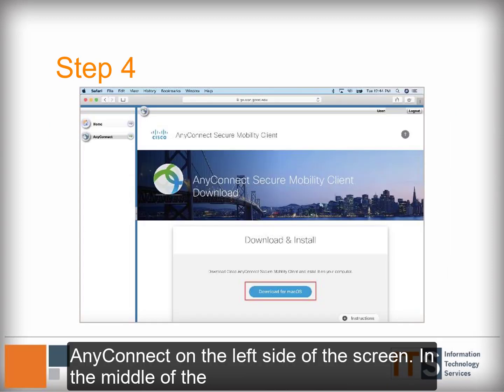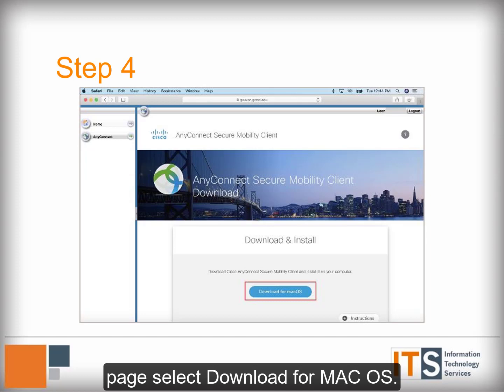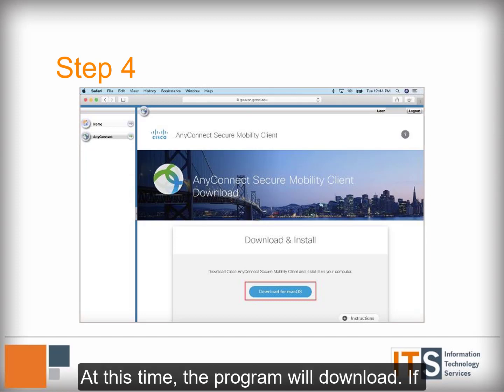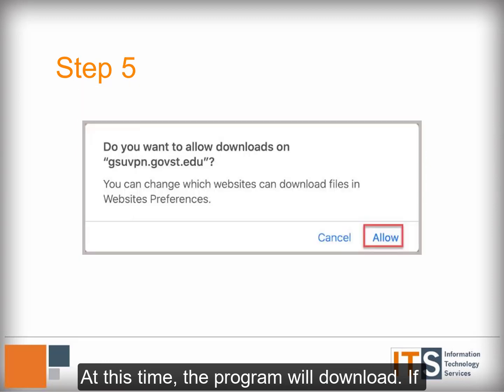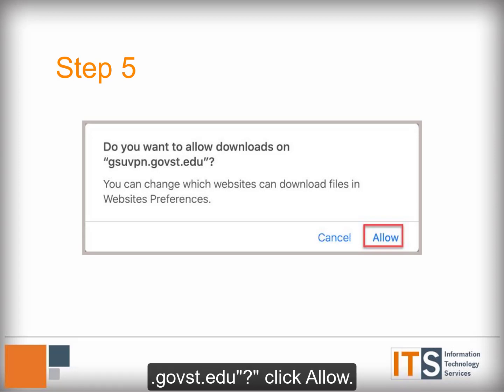In the middle of the page, select Download for Mac OS. At this time the program will download. If prompted to allow downloads on gsuvpn.govst.edu, click Allow.